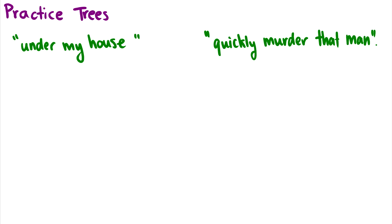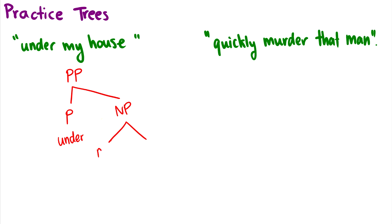Let's do some practice trees. Take the phrase 'under my house' — this is a prepositional phrase. I can take the preposition 'under' and ask myself, what's next in the sentence? 'My house.' Okay, 'my house' is a noun phrase, so this is going to be the complement of 'under'. We have noun phrase 'my house', where 'my' is a determiner and 'house' is a noun. So the tree for this phrase would be a PP that breaks into a P and an NP, and the NP breaks into a determiner and a noun. So: under my house.